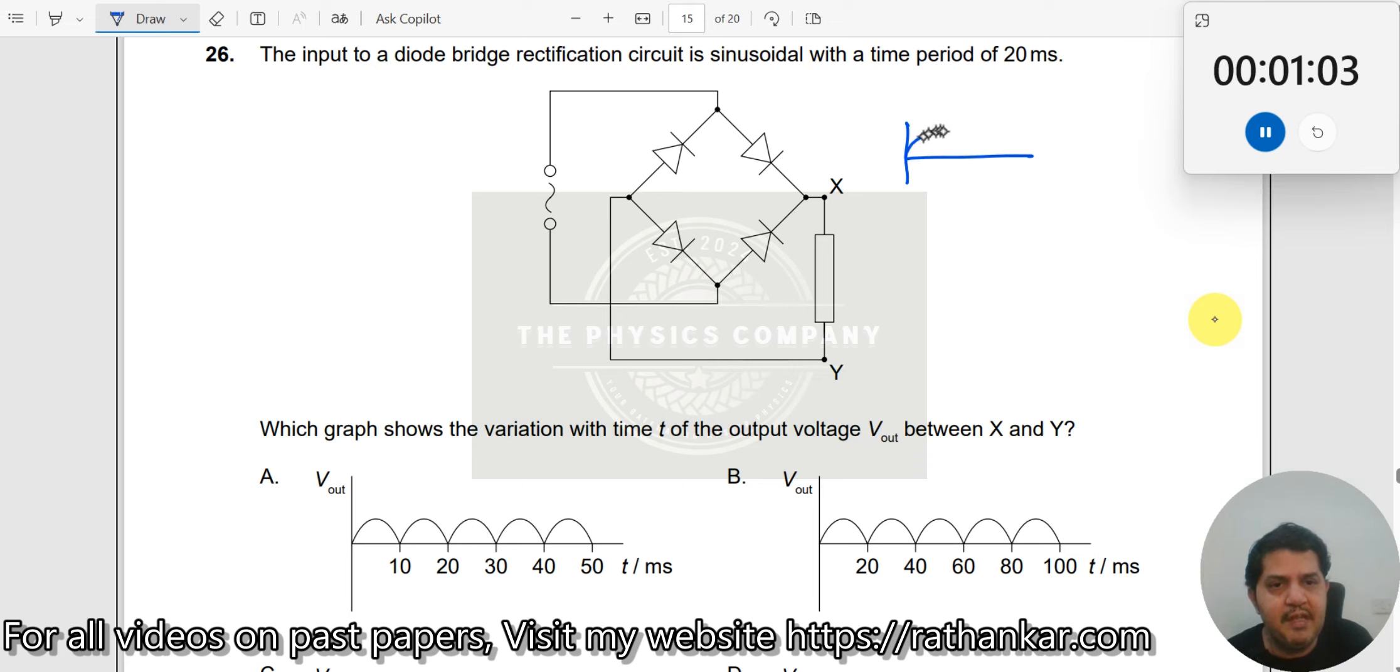If you have an input signal like this, then your output signal would be like this, which means the positive or negative halves are made to be positive. Now when you say time period of 20 milliseconds, it means starting from here to here is 20 milliseconds.